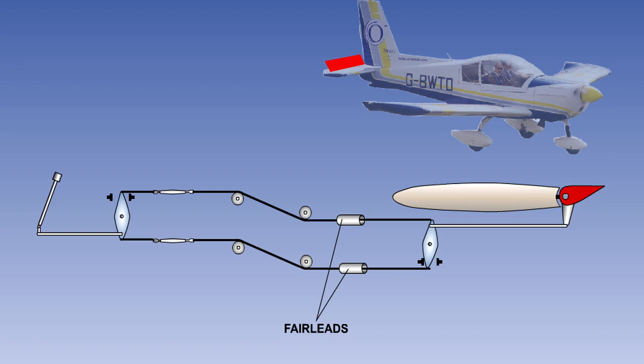A fair lead is a guide, manufactured from a soft metal or plastic, used where the control cable passes through the airframe structure, so that if the cable were to flex laterally, it would come into contact with the fair lead rather than the airframe structure.